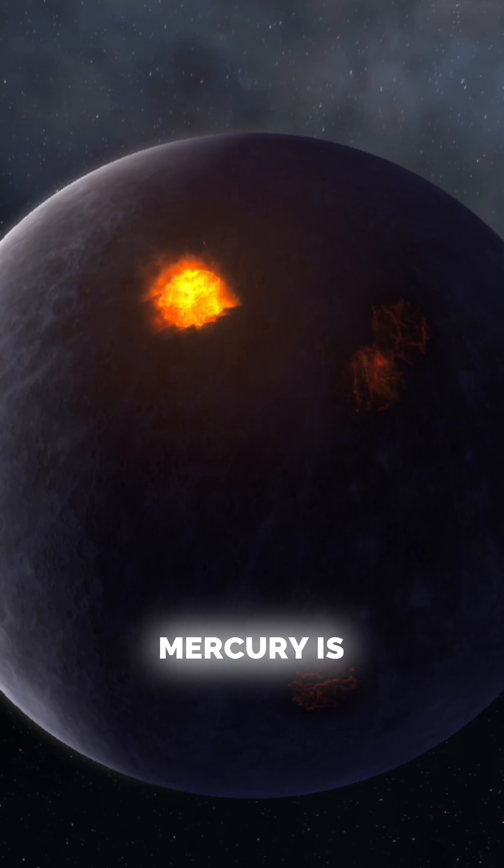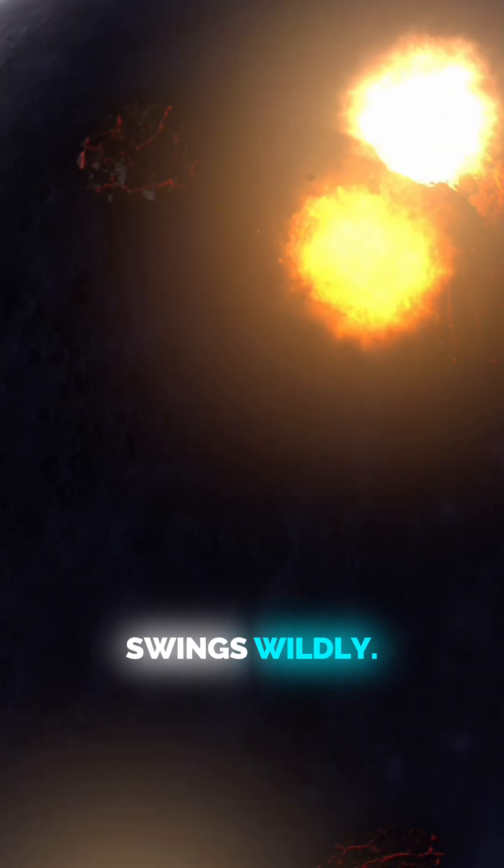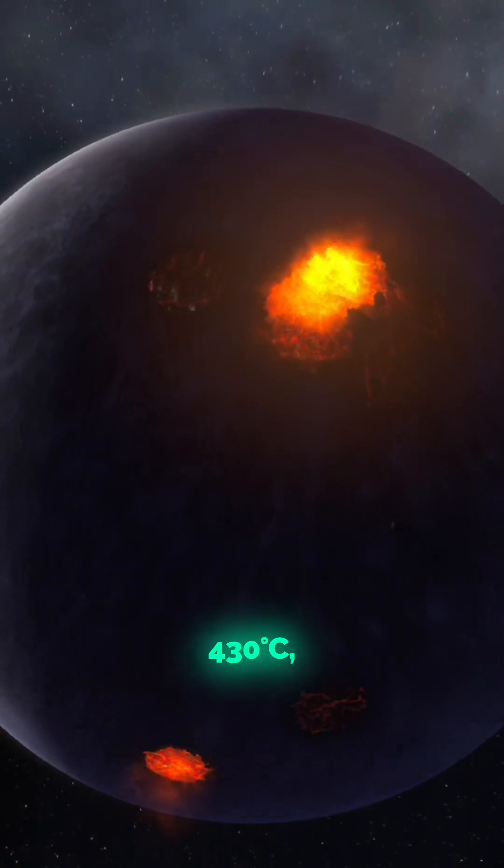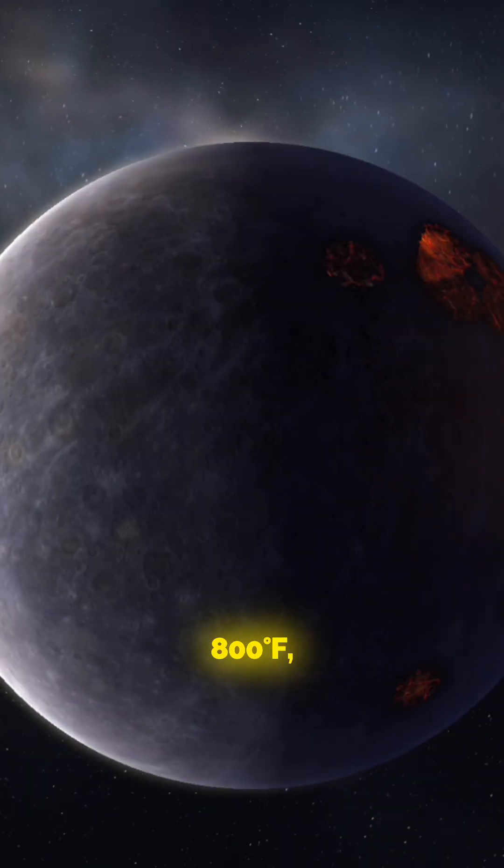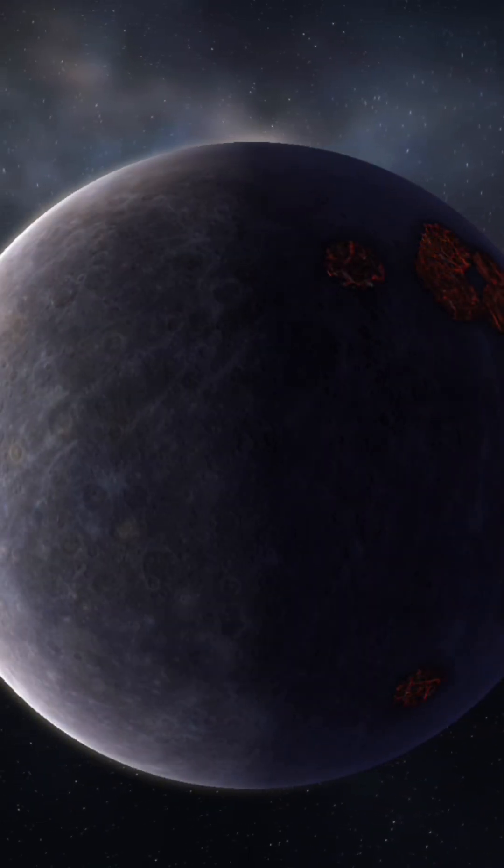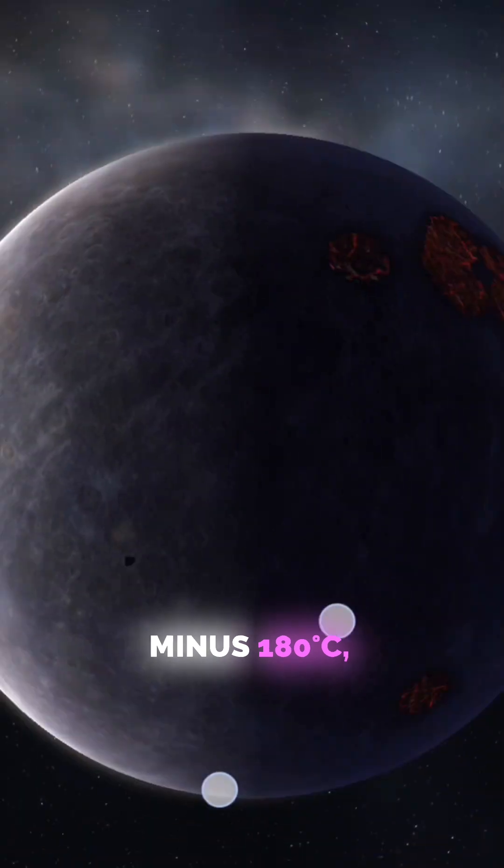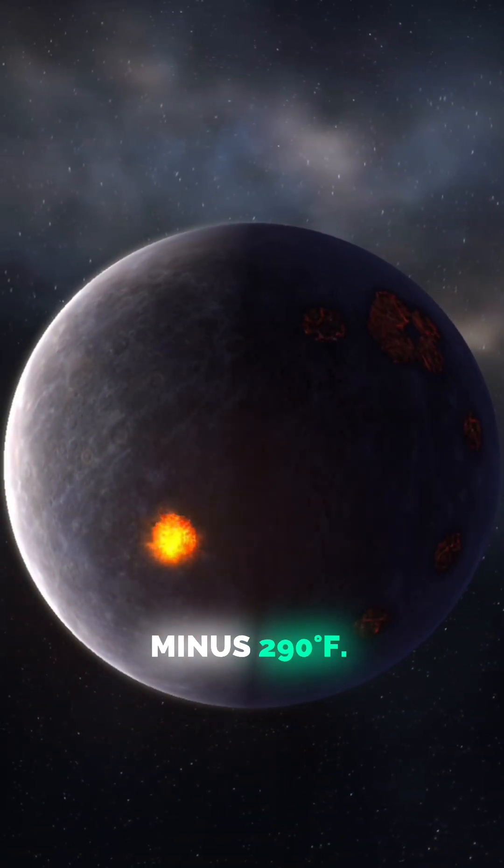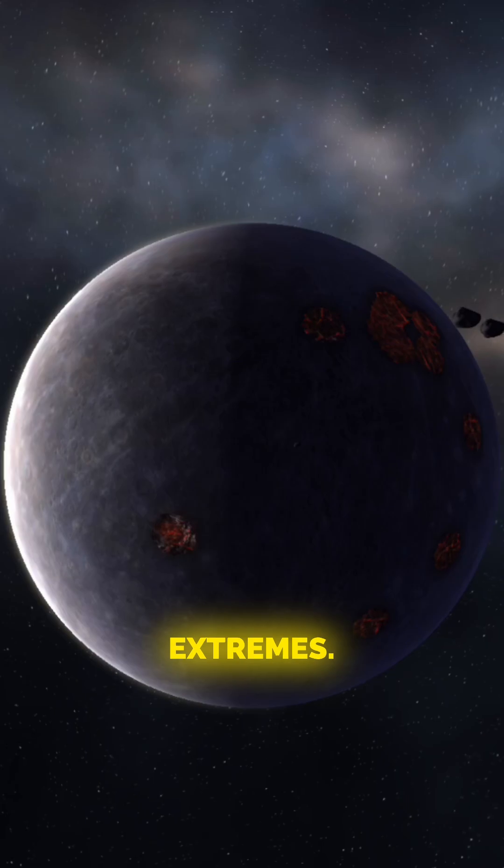3. Mercury is both extremely hot and freezing cold. Mercury's surface temperature swings wildly. During the day, it can hit 430 degrees Celsius, 800 degrees Fahrenheit, and at night, it drops to minus 180 degrees Celsius, minus 290 degrees Fahrenheit. It's the ultimate planet of extremes.